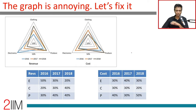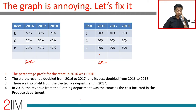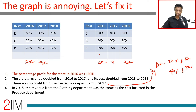Now that we've filled all the data, we no longer need the chart — we only care about the table. The percentage profit in 2016 was 100%, meaning if cost is x, revenue is 2x. Revenue doubled from 2016 to 2017, so 2017 revenue is 4x. No profit from electronics in 2017 means revenue equals cost: 30% of 4x equals 40% of total cost, so total 2017 cost is 3x.